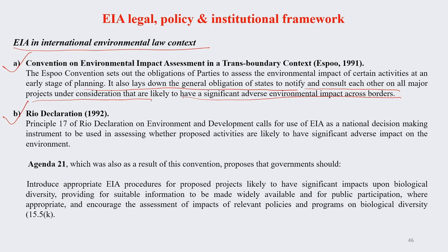Next, the Rio Declaration 1992 — all of us are aware of its 17 principles on environment and development. Rio Declaration called for EIA as a national decision-making instrument. In 1992 it was decided that every country must carry out EIA to assess whether proposed projects are likely to have significant adverse impact on the environment. Almost 30 years back, this was already brought into effect.